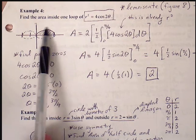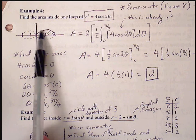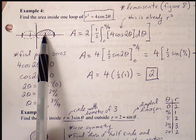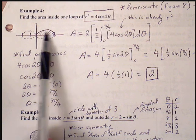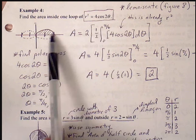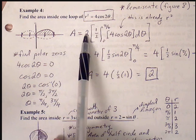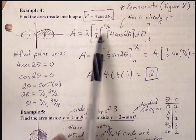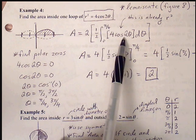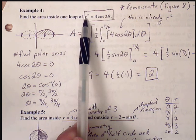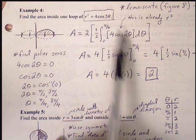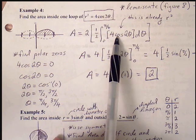At pi over 4, we get half of one loop, so we can use symmetry. We find the area of this half and then double it. So we have one half times the integral from 0 to pi over 4 of r squared d theta. We don't need to square again here because r squared is already given as 4 cosine of 2 theta — so we only use 4 cosine of 2 theta directly.